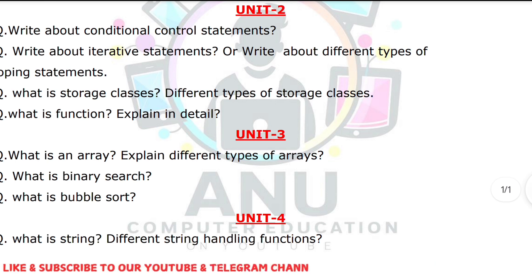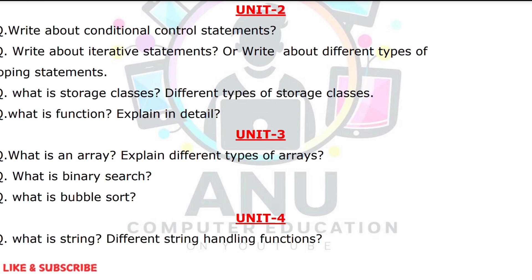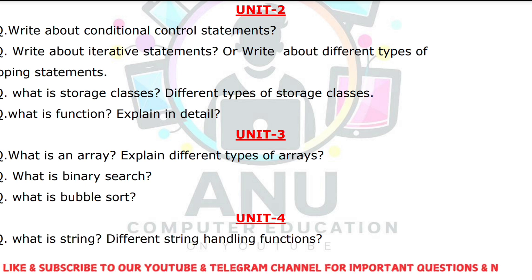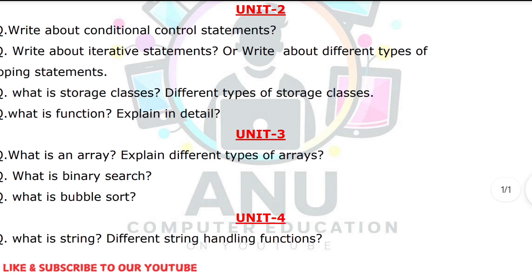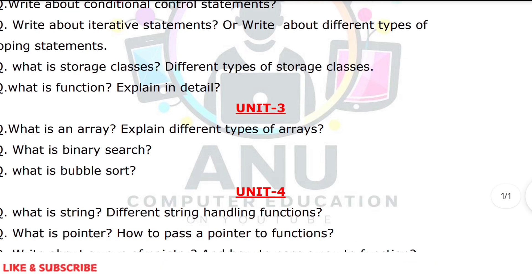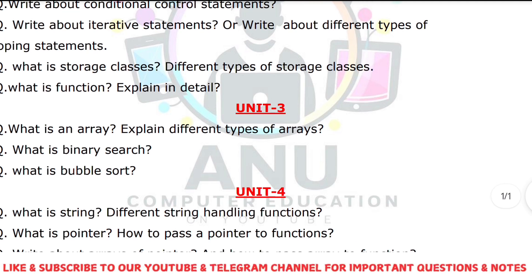What is a pointer and how to pass a pointer to a function? A pointer is a special variable which is used to store the address of another variable. You have to explain this with an example and show how to pass a value using a function. Next: array of pointers — we can also pass an array as a value to functions, which is very important.